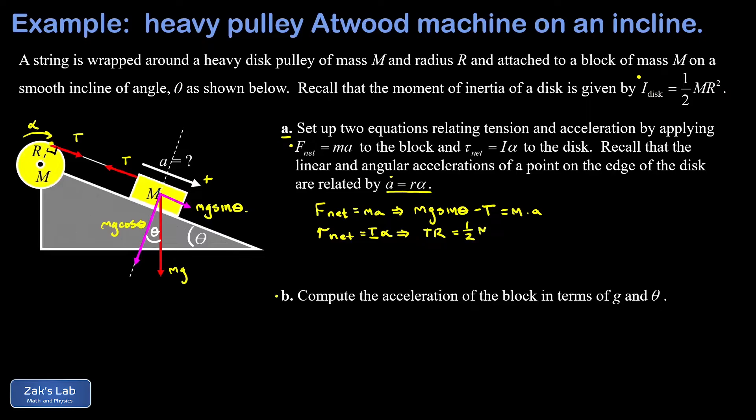This is a disc, so I is one half MR squared. Instead of writing alpha, I'm going to use the relationship a equals r alpha and solve for alpha—that's a over r. One of those r's cancels on the right hand side between the numerator and denominator, the other one cancels by dividing by r on both sides of the equation. So the r's are all gone, and we can clean up our system of equations: mg sine theta minus T equals ma, and T equals one half ma.